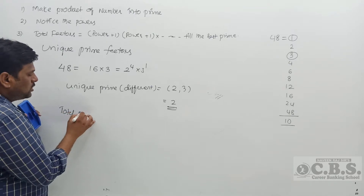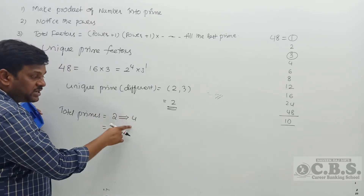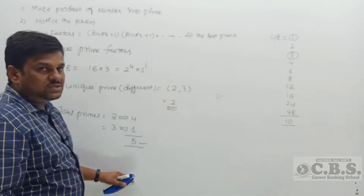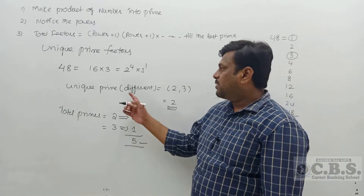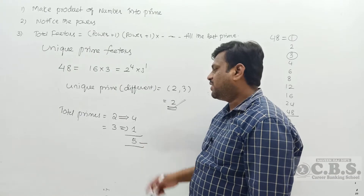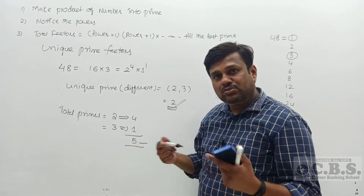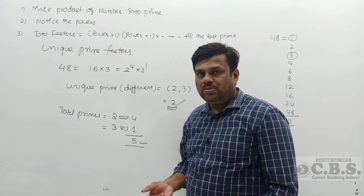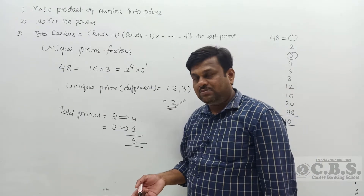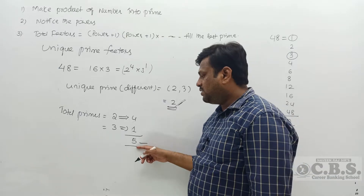Total prime factors means counting with repetition. 2 is repeated 4 times and 3 appears once, so total prime factors = 4 + 1 = 5. Unique primes: 2 and 3, total = 2. Total primes: 5. That is the distinction between unique prime factors and total prime factors.